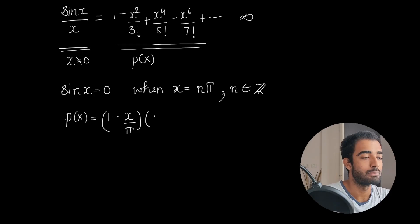And (1 + x/π) since -π and +π are roots of this equation and the constant term is 1. Similarly we can write (1 - x/2π)(1 + x/2π) and so on.